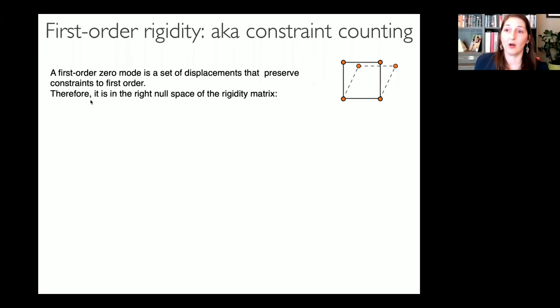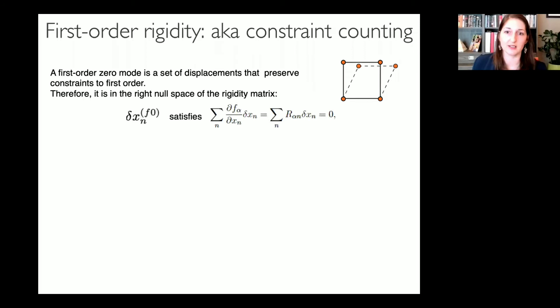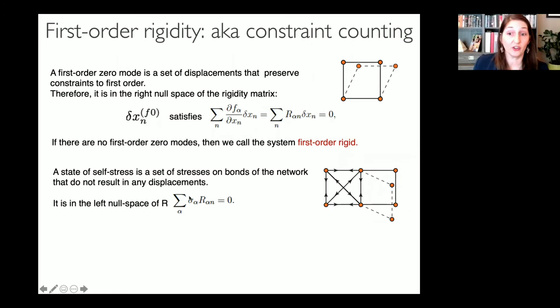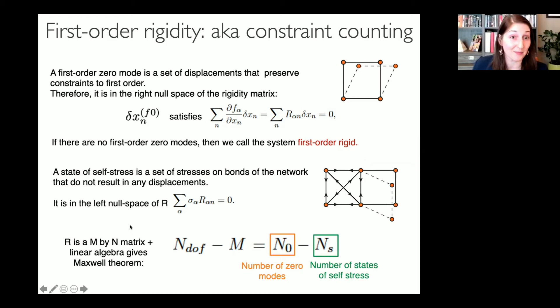A first-order zero mode is a set of displacements that preserve constraints to first order — it's in the right null space of the rigidity matrix R. If there are no first-order zero modes, we call the system first-order rigid. A state of self-stress is a set of bond forces that don't result in any displacements — in the left null space of R. The Maxwell-Caladine constraint counting theorem arises because R is a matrix obeying a rank-nullity theorem: the number of zero modes minus states of self-stress equals degrees of freedom minus constraints.